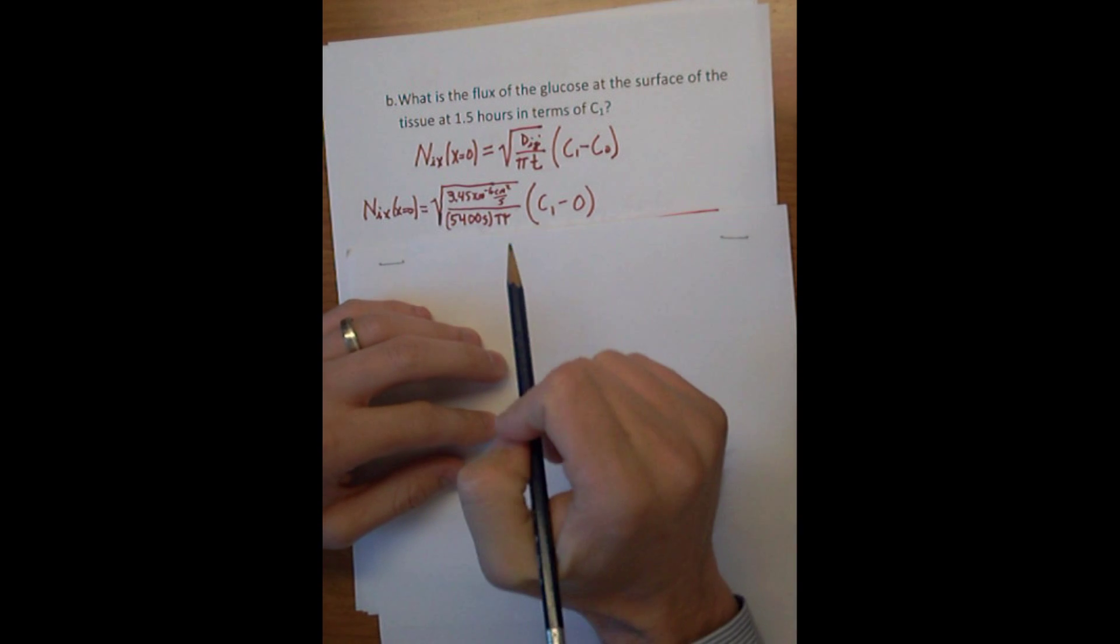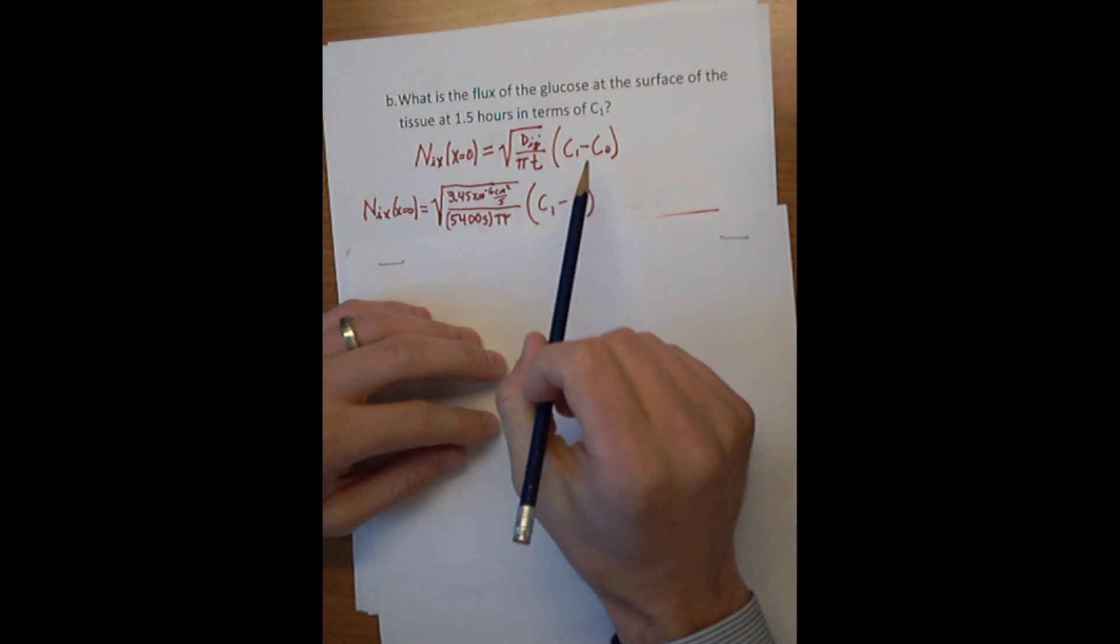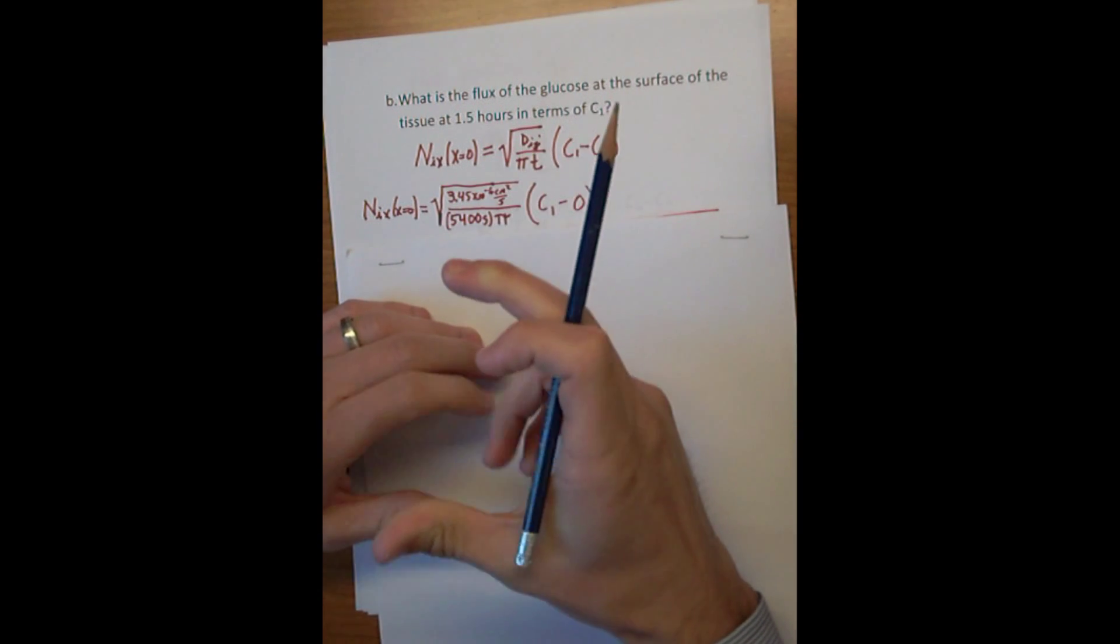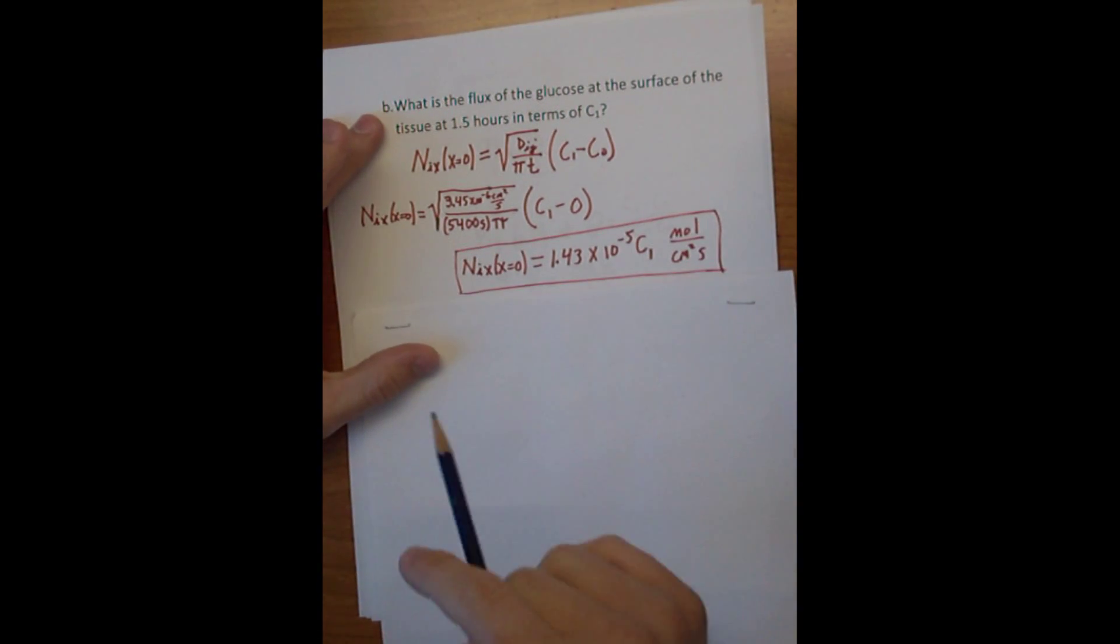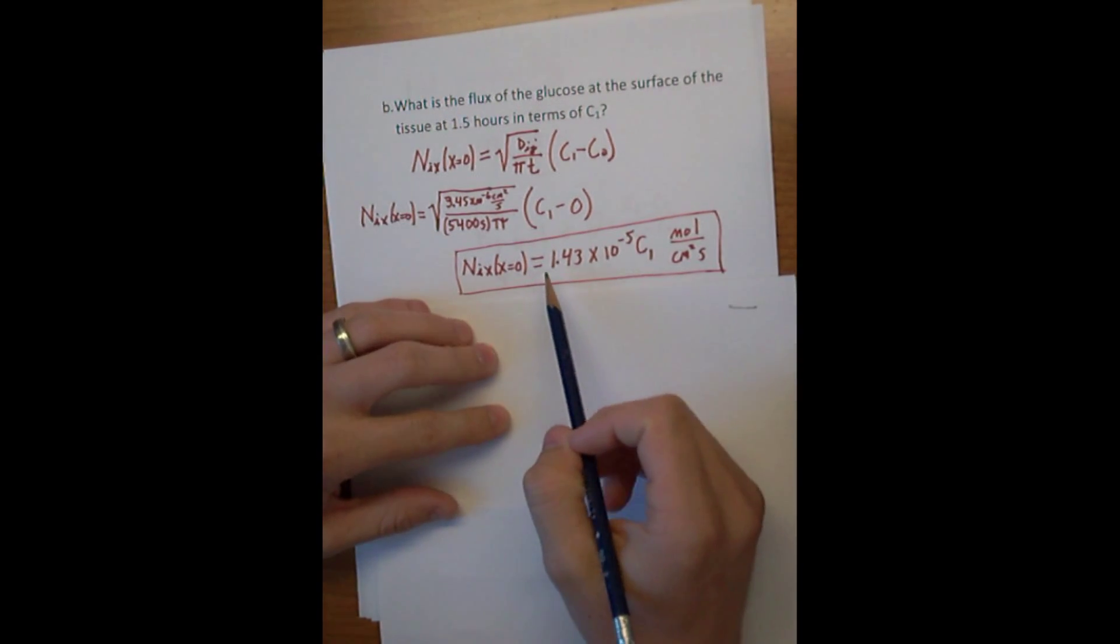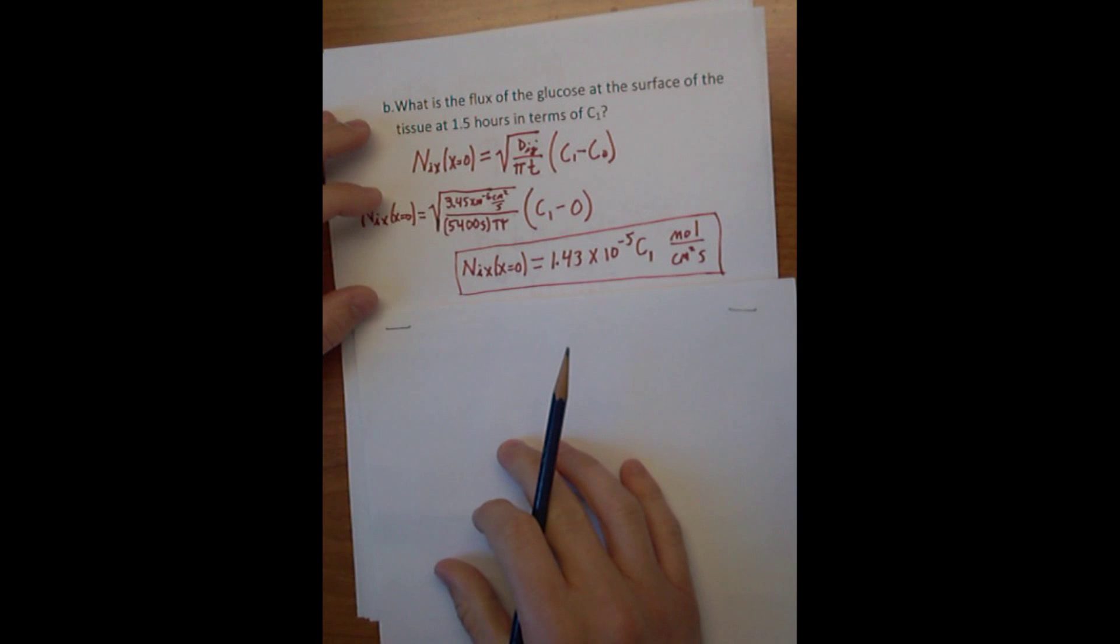All we have to do is basically plug and chug. We have our diffusion coefficient. We know our time is still 5,400 seconds. And C0, because the tissue doesn't originally have any glucose in it, is 0. So we work it out, and the flux in terms of C1 is 1.43 times 10 to the negative 5 C1. Pretty simple.